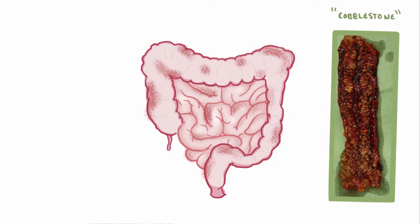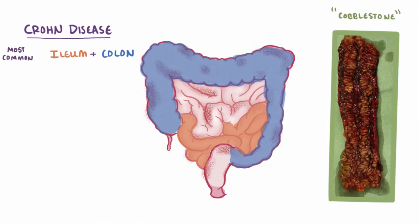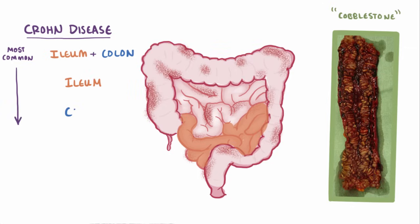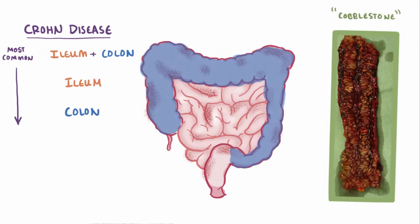A final difference is that Crohn disease can affect any area of the GI tract. Most commonly it affects the ileum and the colon, second most commonly just the ileum, and third most commonly just the colon. But it can really affect any part of the GI tract, from the mouth to the anus.